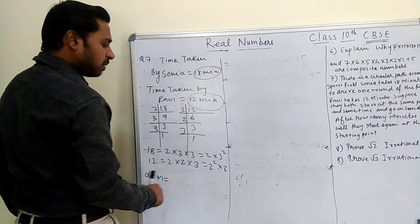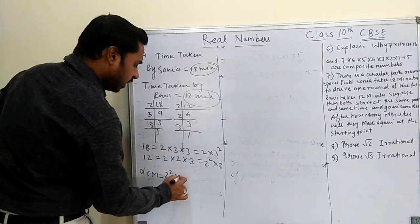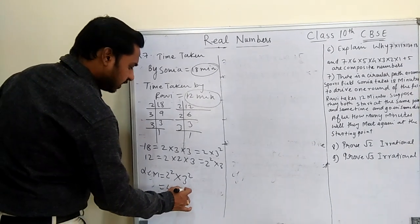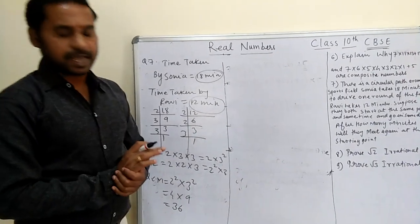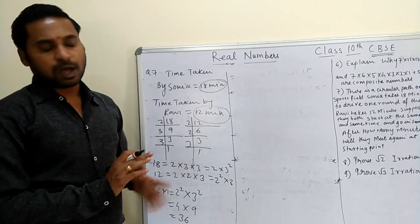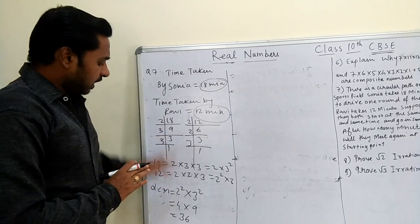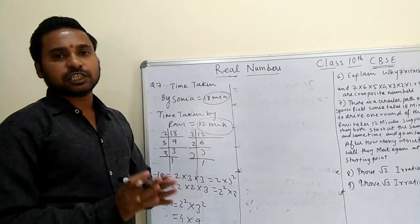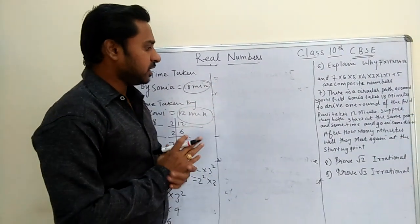To find the LCM, we take the highest power of each prime factor. For 2, highest power is 2². For 3, highest power is 3² = 9. So LCM = 4 × 9 = 36. Therefore they will meet again after 36 minutes.